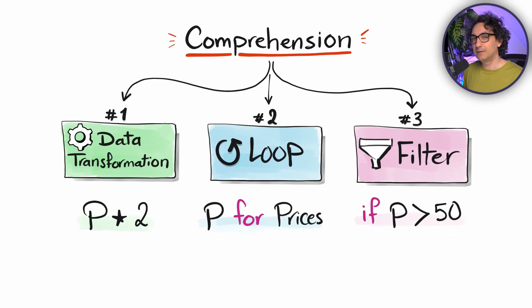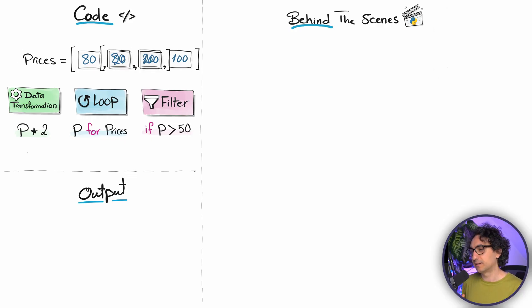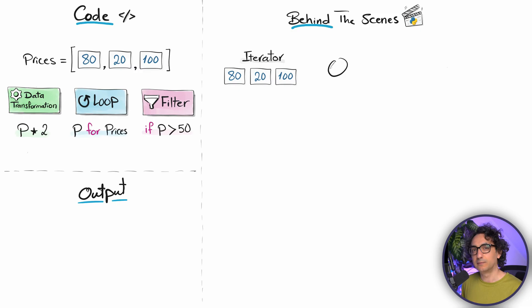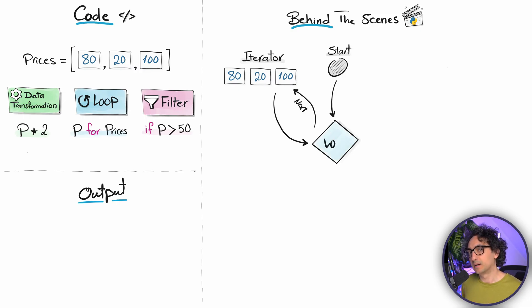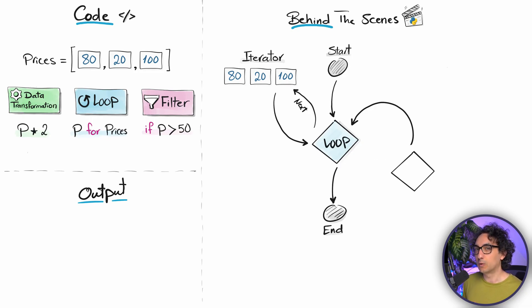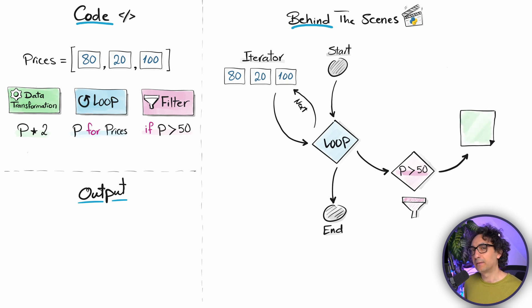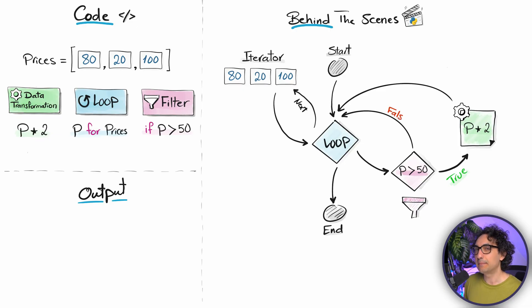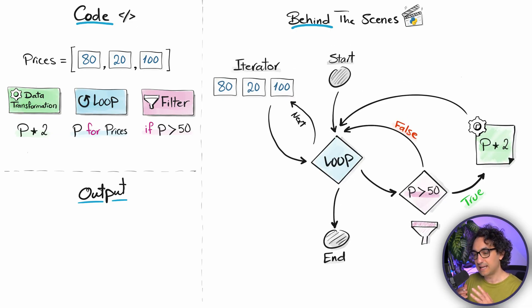Behind the scenes, Python first creates an iterator from your list, then builds a classical for loop going through all items one by one. Inside the loop, Python first evaluates the if condition — checking whether the price is higher than 50. Only if that is true does Python apply the data transformation expression (price multiplied by two), then go back to the start of the loop. If the condition is false, Python skips everything and goes back to the top of the loop.